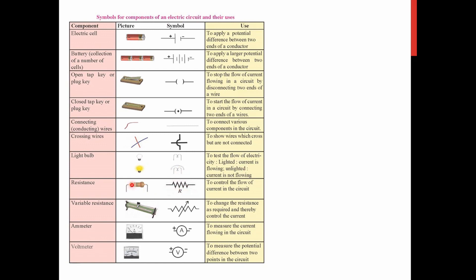Resistance is used to control the flow of electric current — you will use this symbol throughout. Variable resistance can be changed; for example, a fan regulator works similarly: at setting one, more resistance is introduced so less current flows and the fan goes slow; at setting five, less resistance means the fan goes fast. Fixed resistance cannot be changed once introduced. The ammeter symbol measures current; the voltmeter symbol measures potential difference.